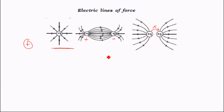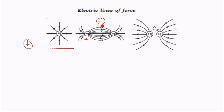If you look in the textbook, they have defined that no line can intersect another. That means when looking at the electric field, there can't be two force directions at the same point. Suppose if I put a positive charge here, I cannot also draw lines in a conflicting direction — that would not be right.